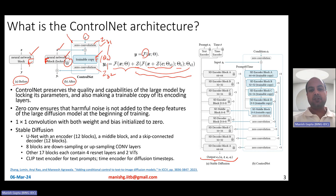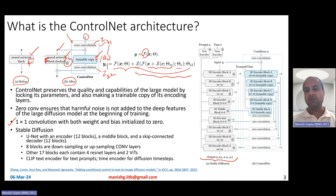They're called zero convolutions because you initialize them using zeros, and it ensures that harmful noise is not added to the deep features of the large diffusion model at the beginning of training. At the beginning of training, you want the model to be as close to the original diffusion model as possible. Zero convolution simply means both weights and biases are initialized to zero.